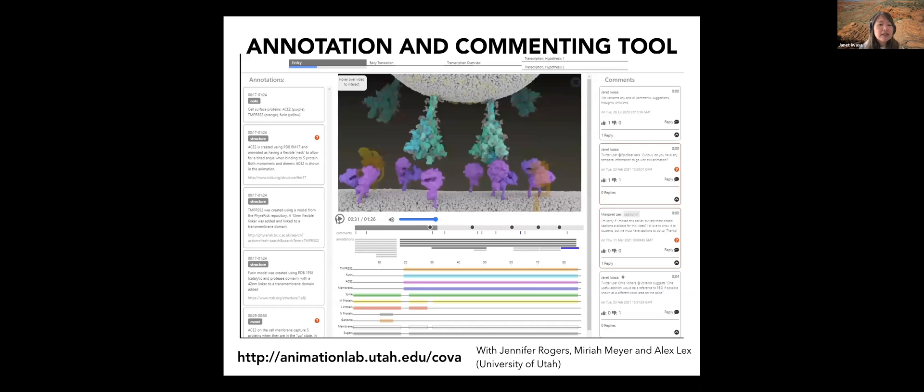The second part of this project focuses on creating annotation and commenting software, and this really enables us to describe the data that we use to create the animation. And it also allows the community to comment and to ask questions and critique the hypotheses that we depict in this animation. So this is a snapshot of what that tool looks like. It's a web-based tool, totally free to use. You can check it out right now on the website. So you can see the animation in the center there. You can play the animation, and on the left side there are annotations, so what kind of papers did we use, what structures did we use to create this animation, and on the right side are comments and questions from the community.